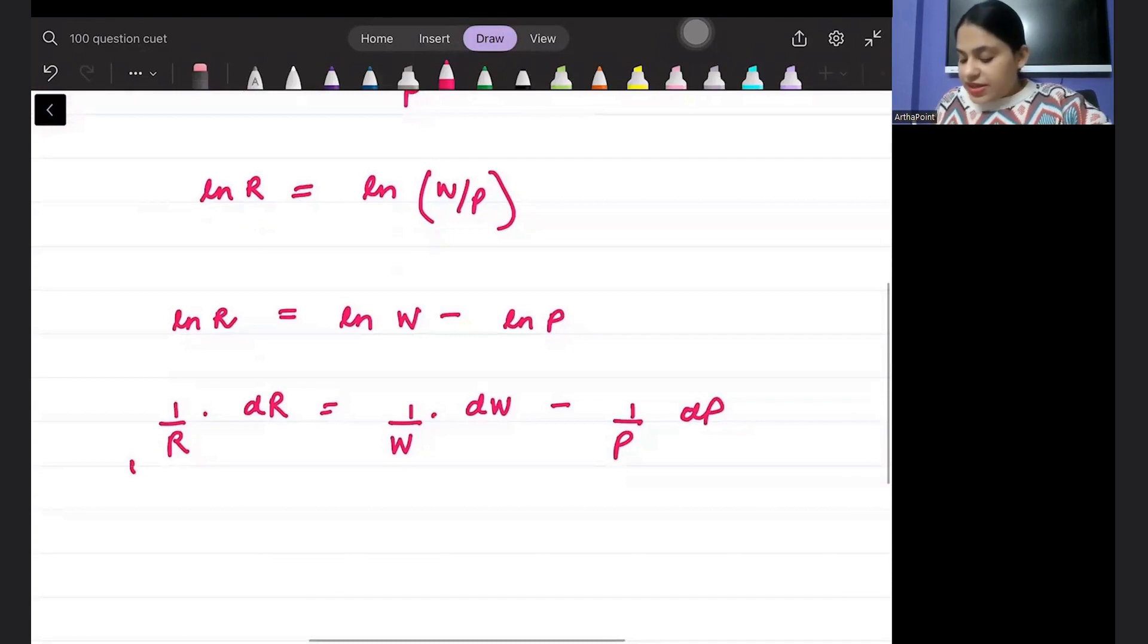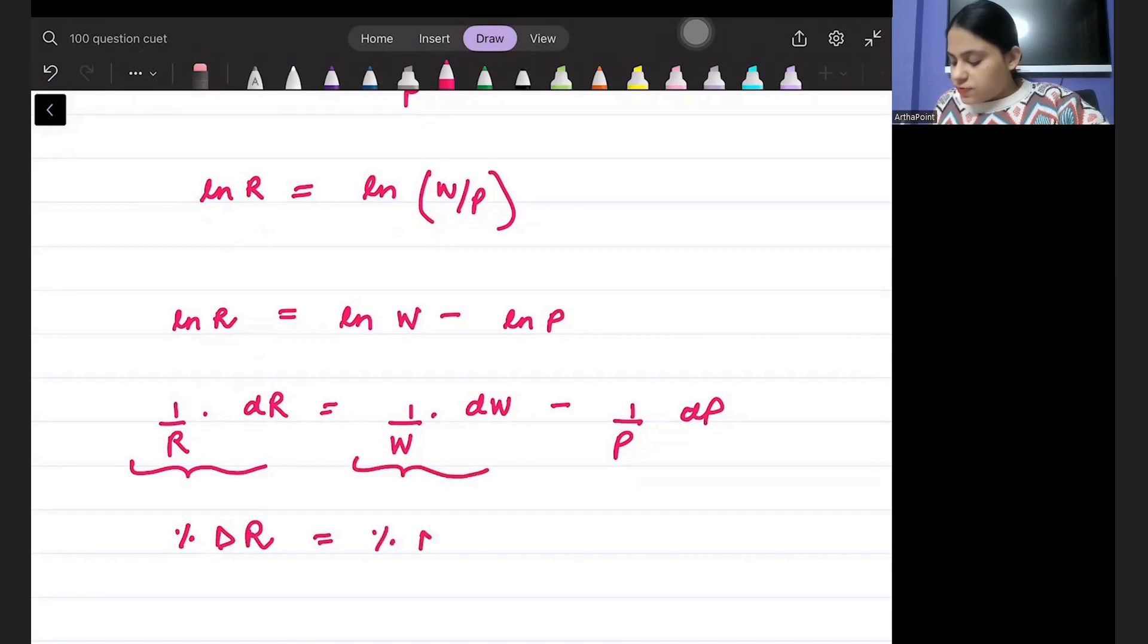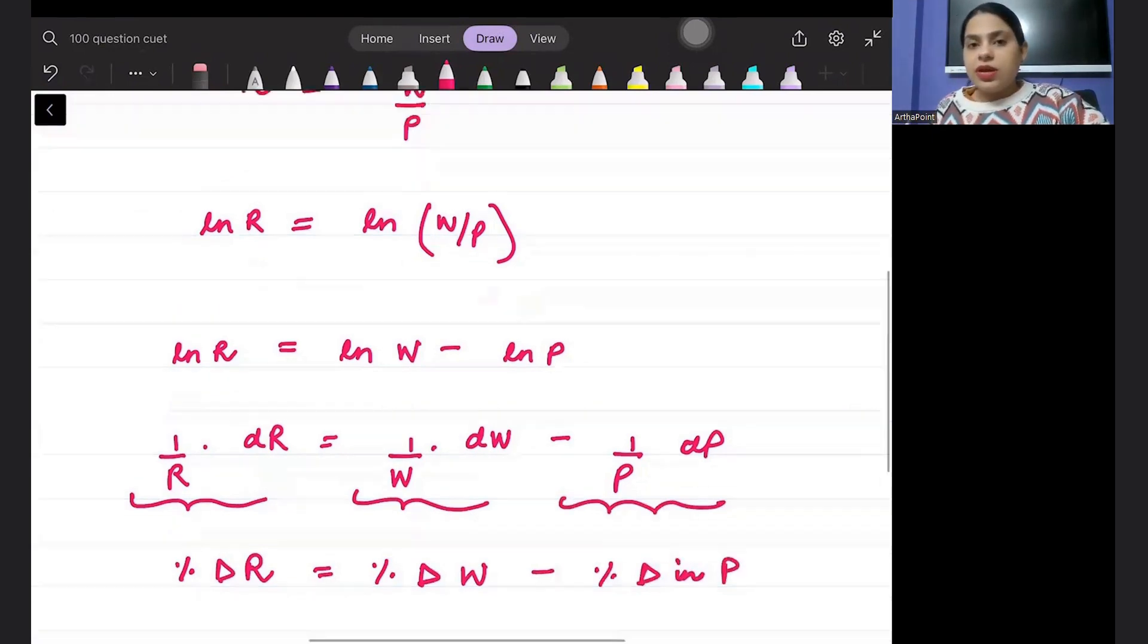Clear? Ye ho gaya growth rate, ya percentage change in real wage. This is percentage change in nominal wage. This is percentage change in price. Clear?